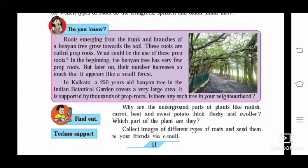Roots emerging from the trunk and branches of a banyan tree grow towards the soil. These roots are called prop roots. In the beginning, the banyan tree has very few prop roots, but later their number increases so much that it appears like a small forest. In Kolkata, a 250-year-old banyan tree in the Indian Botanical Garden covers a very large area, supported by thousands of prop roots.